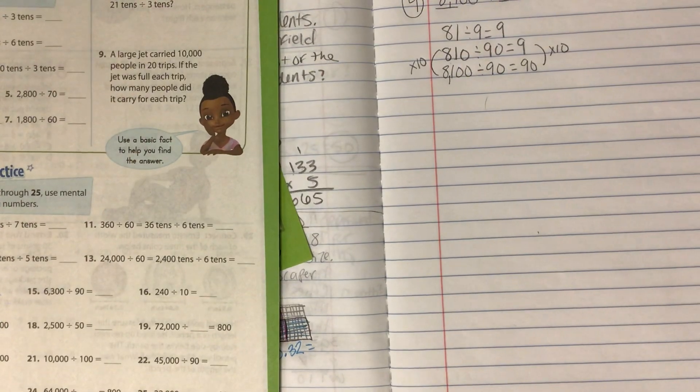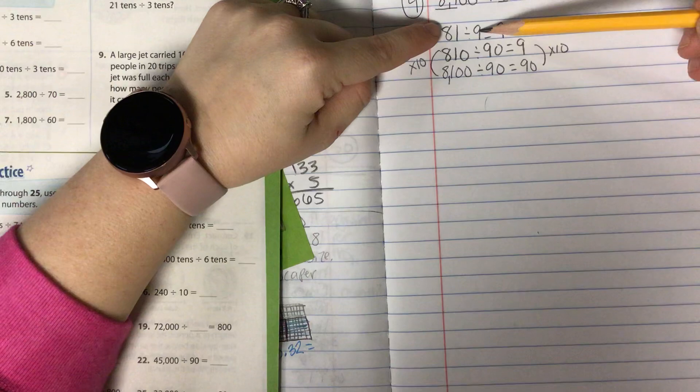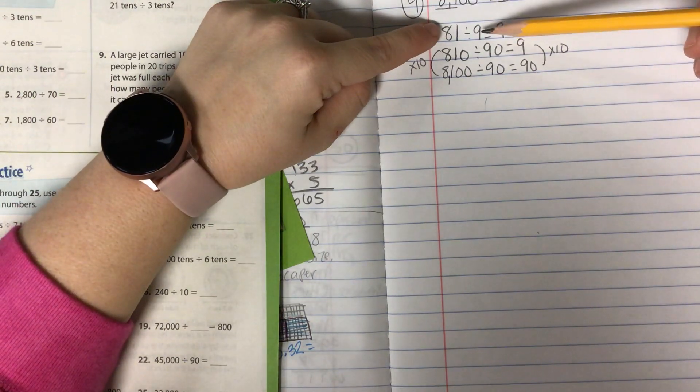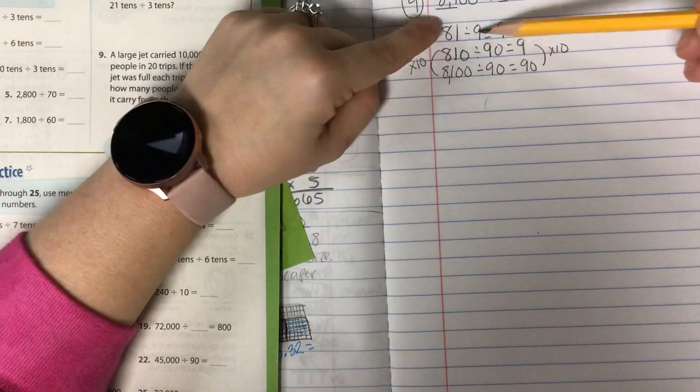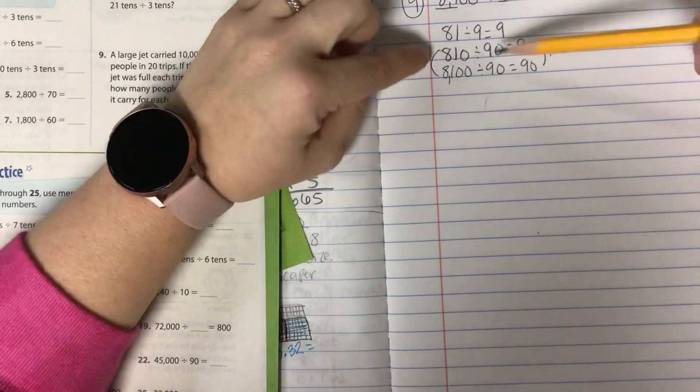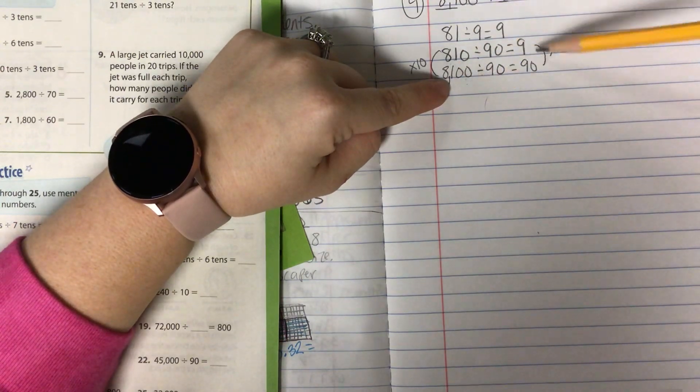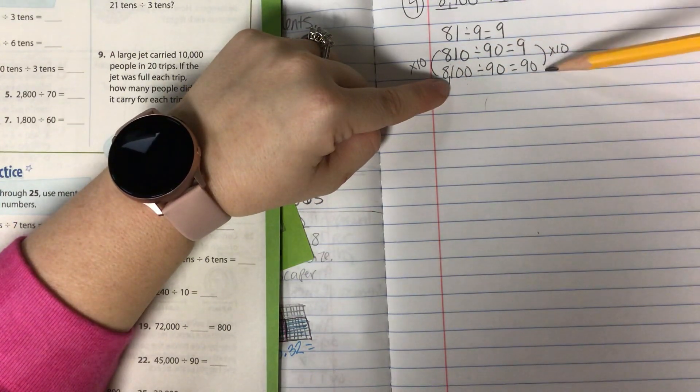Some of you may be asking why this one doesn't get 10 times bigger. It's because you're getting 10 times larger on both numbers. And when you do it to both numbers, they cancel each other out. So that's why when you're getting 10 times larger on just one of the numbers, then your answer is getting 10 times larger over here.